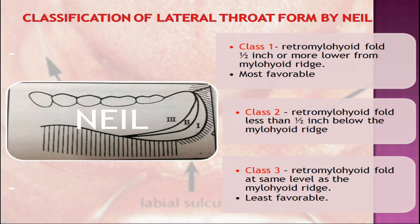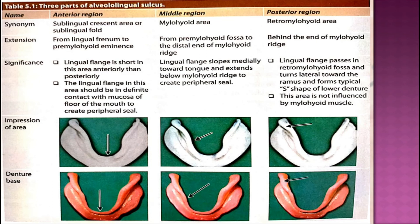Class 1: the retromylohyoid fold is half an inch or more lower from the mylohyoid ridge — this is the most favorable form. Class 2: the retromylohyoid fossa is less than half an inch below the mylohyoid ridge. Class 3: the retromylohyoid fold is at the same level as the mylohyoid ridge — this is the most difficult for retention and the least favorable. The extent of the pouch is noted with the tongue at rest and in function by placing the index finger into the pouch and asking the patient to protrude the tongue. If the pouch persists during tongue movements and swallowing, the lingual flange is carried into this area to aid in retention.